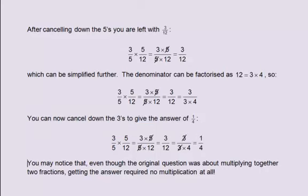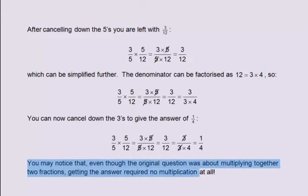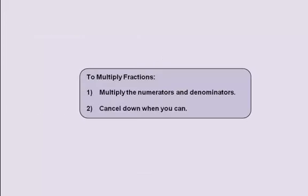You may notice that, even though the original question was about multiplying together two fractions, getting the answer required no multiplication at all. To multiply fractions: one, multiply the numerators and denominators; two, cancel down when you can.